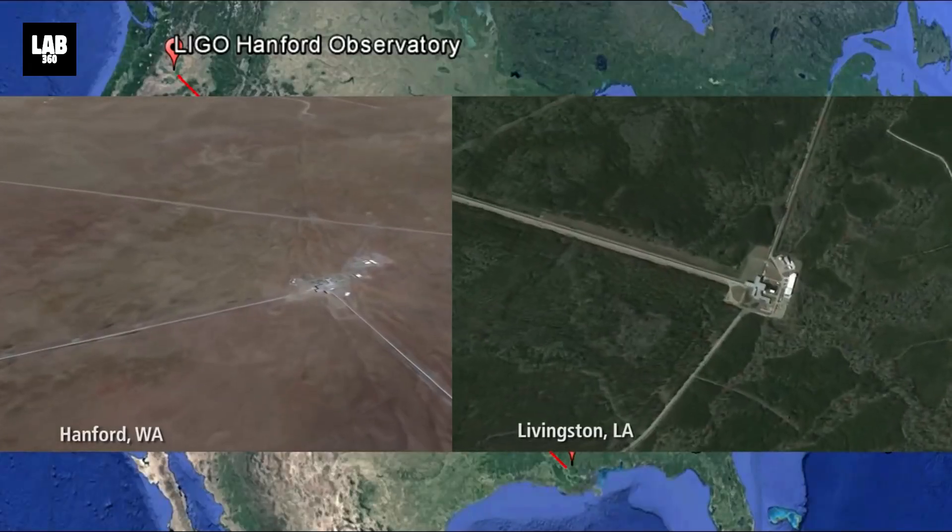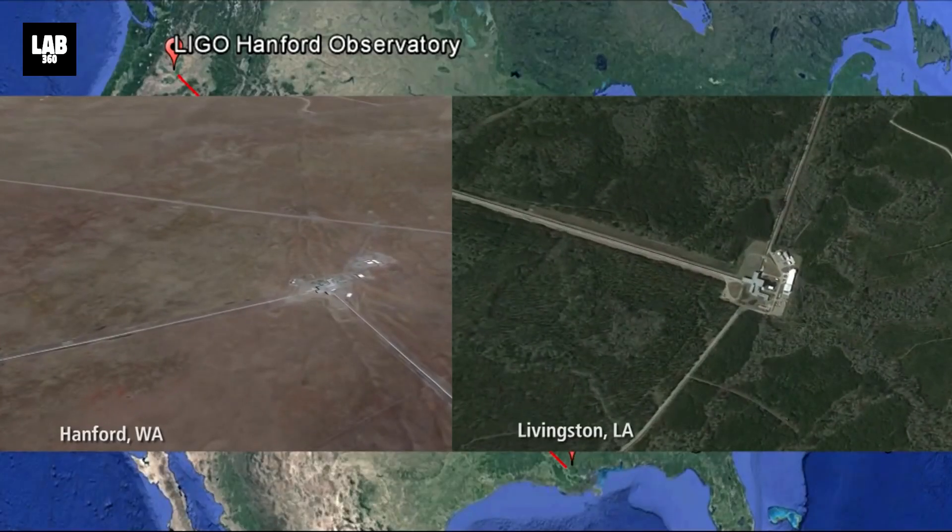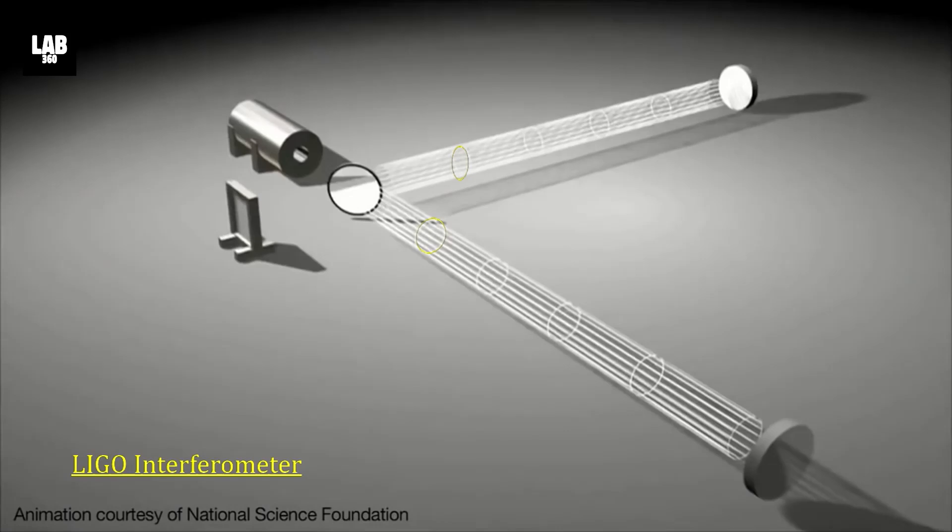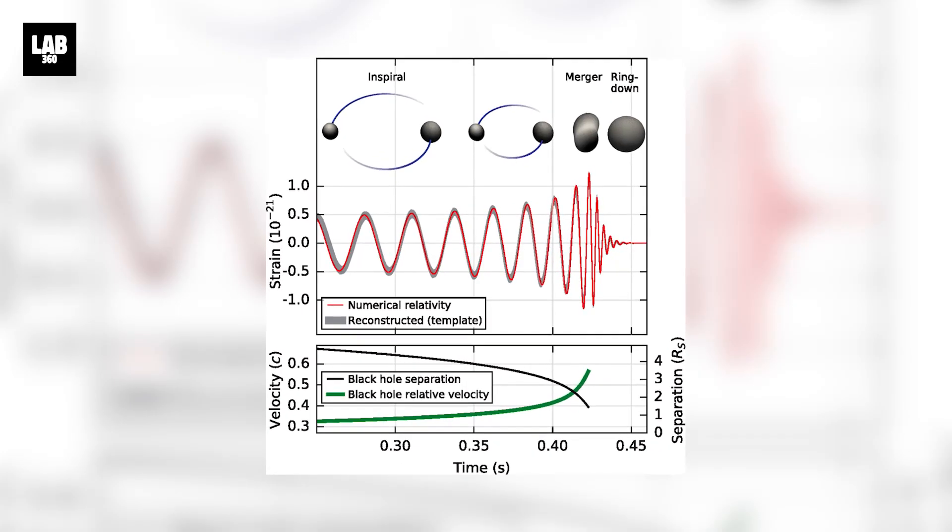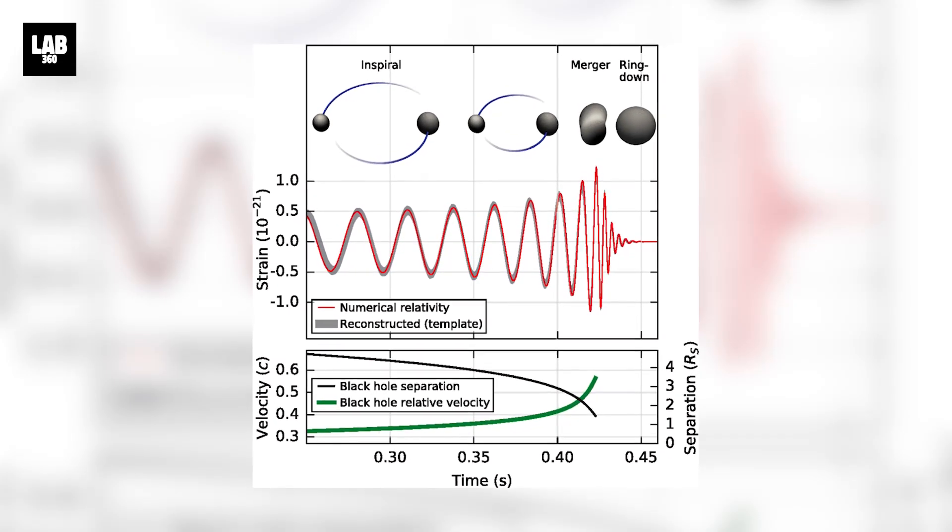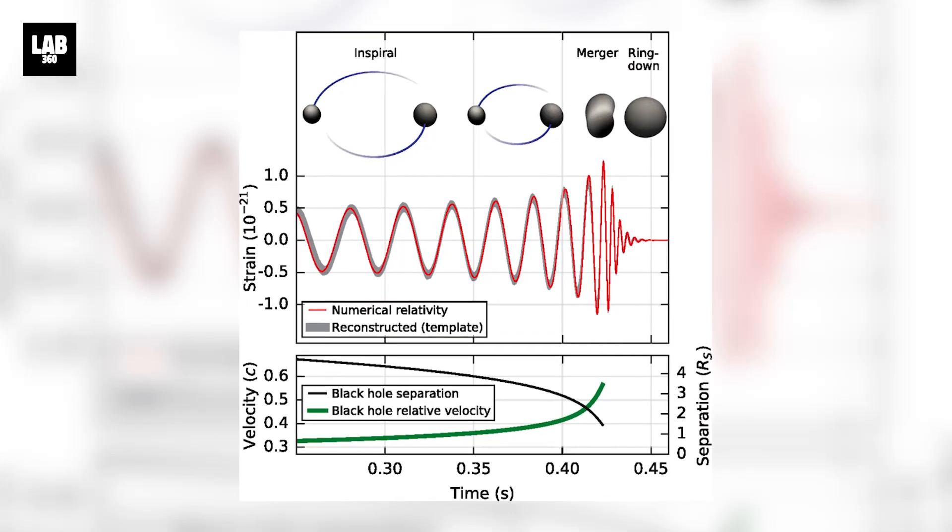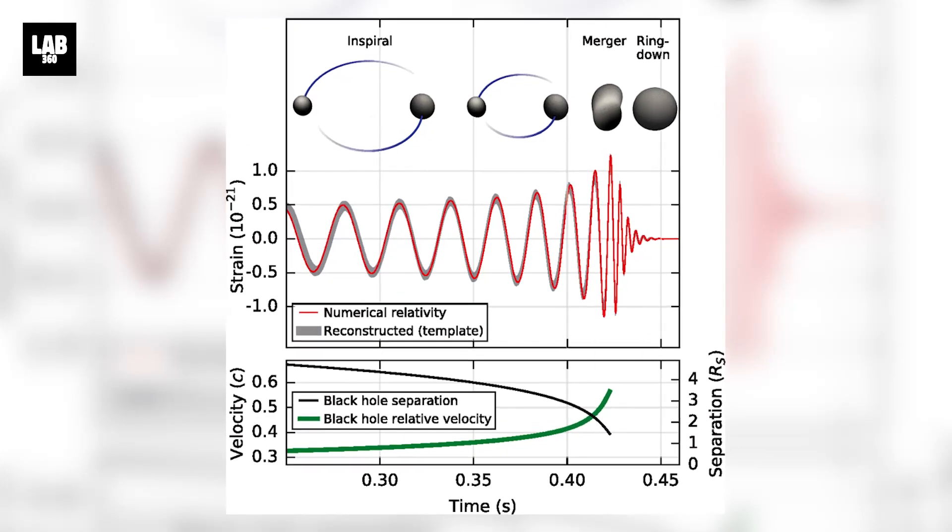While the Laser Interferometer Gravitational Wave Observatory or LIGO has helped us see the mergers of smaller black holes, we have never observed the merger of two supermassive black holes. That is because the frequency of the gravitational waves generated by a supermassive black hole merger is lower than what LIGO is equipped to detect.